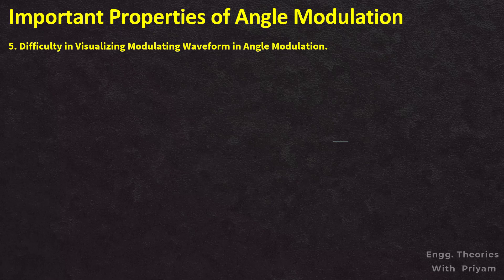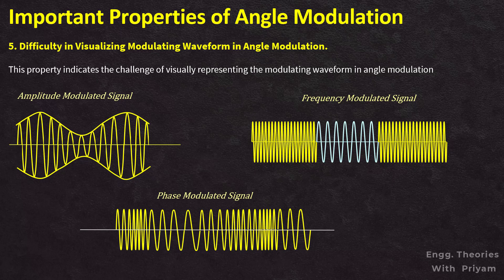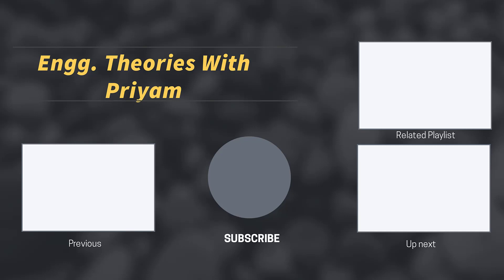The final property is the difficulty in visualizing the modulating waveform in angle modulation. This property highlights the challenge of visually representing the modulating waveform in angle modulation, specifically in phase modulation — which is why we couldn't differentiate between phase modulated and frequency modulated signals when using a sinusoidal modulating signal. Unlike amplitude modulation, where the modulating waveform is clearly seen as the envelope of the modulated signal, this isn't the case in angle modulation. Due to the nonlinear nature of angle modulated signals, it becomes difficult to visually discern the shape of the modulating waveform. This concludes our discussion for this lecture.